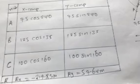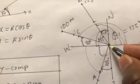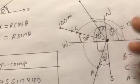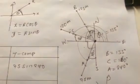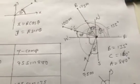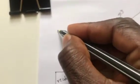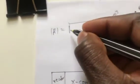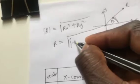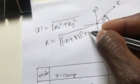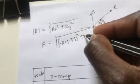We can now find the overall resultant displacement from the starting point — that is, from the origin where all coplanar vectors begin. The resultant magnitude formula is: R = √(Rx² + Ry²). Substituting: R = √((-219.85)² + (57.64)²).